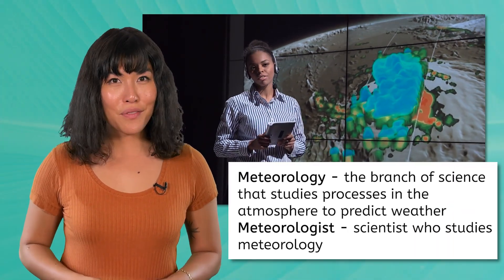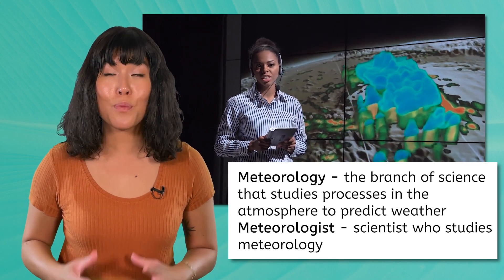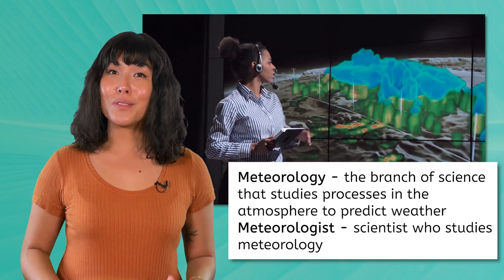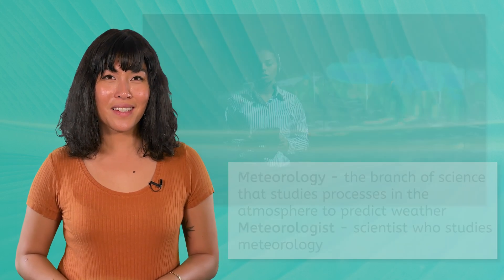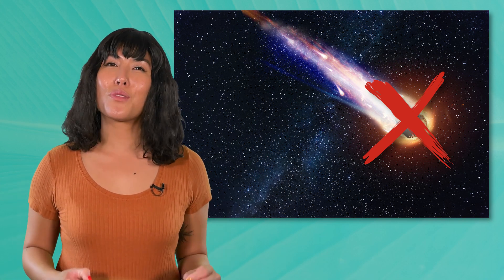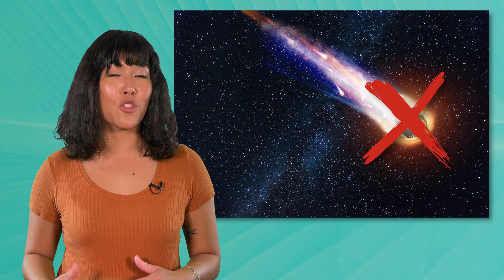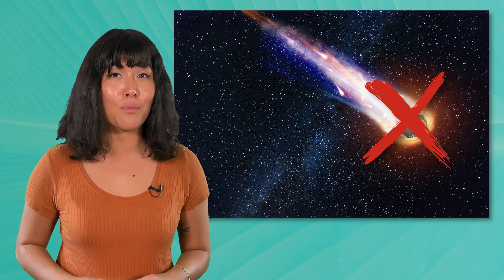Meteorology is the branch of science that studies processes in the atmosphere to predict weather, and these scientists are called meteorologists. This word can be a bit confusing because it has nothing to do with meteors. While it's true that weather can be complex and sometimes change rapidly, it is not totally unpredictable. Meteorologists use advanced tools and technology to create models that forecast weather conditions. These models analyze patterns and trends in the atmosphere, helping meteorologists predict everything from daily weather to severe storms.